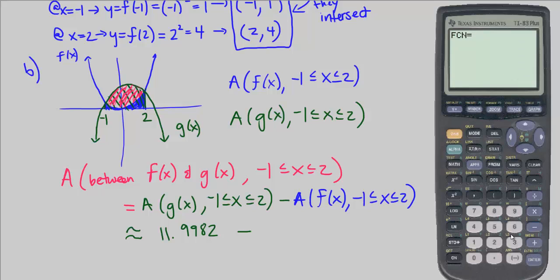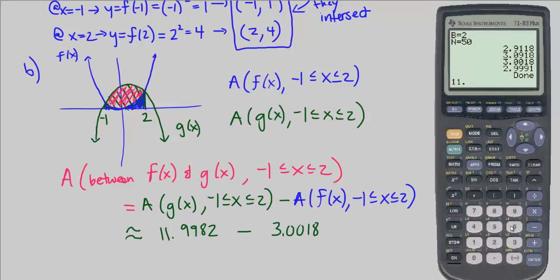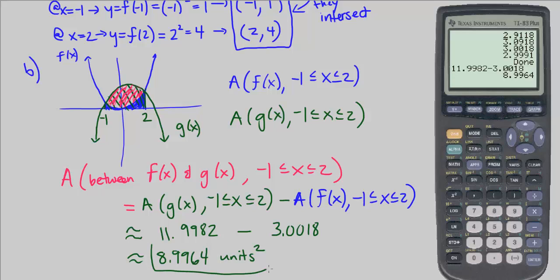Now I run the program again for f of x, which is just x squared, from negative 1 to 2, using 50 rectangles again. Using the trapezoid option gives 3.0018. So 11.9982 minus 3.0018 gives approximately 8.9964 units squared. That is the area between f of x and g of x, with the boundaries found from where they intersect.